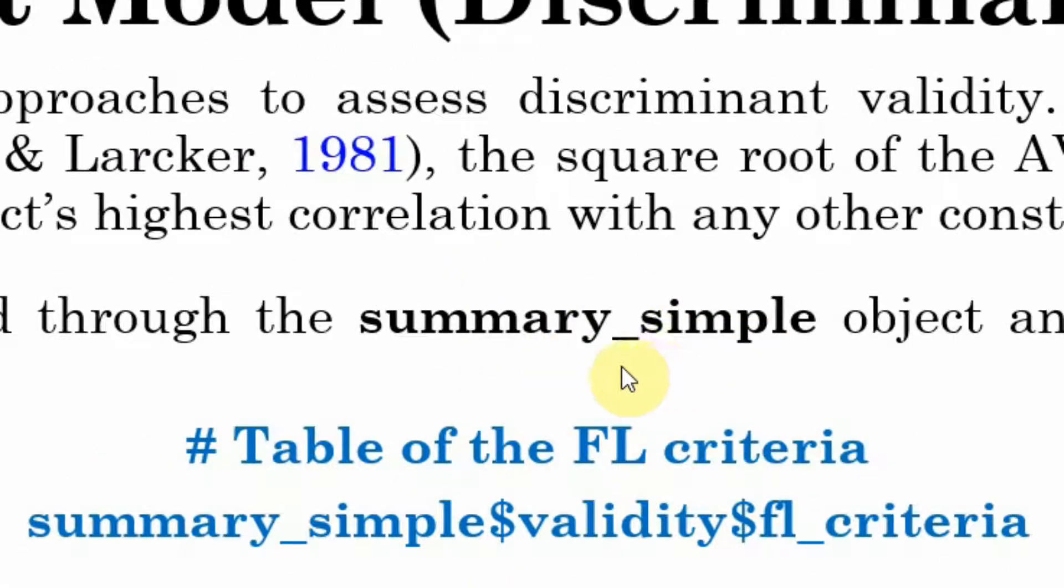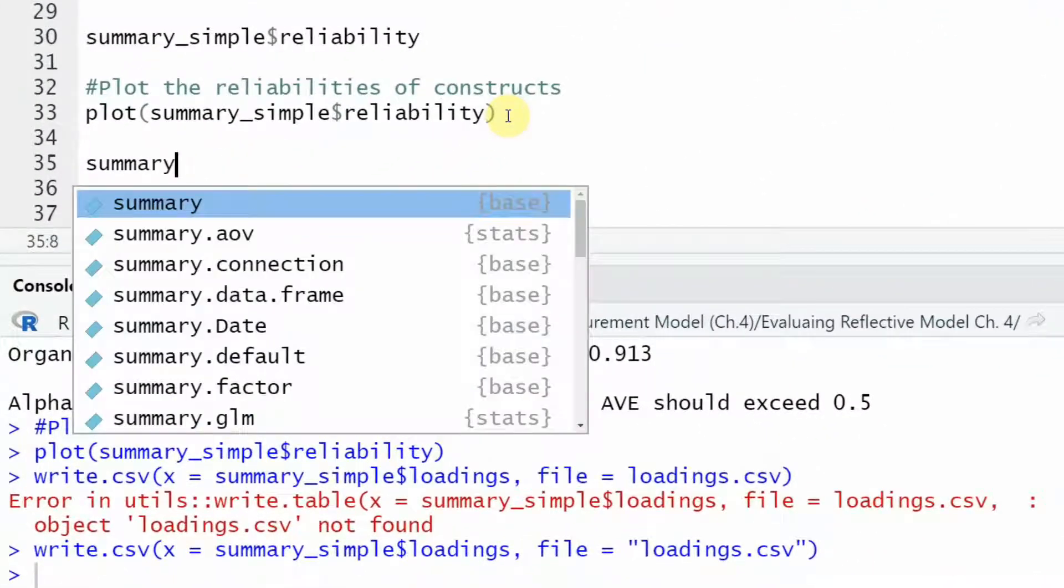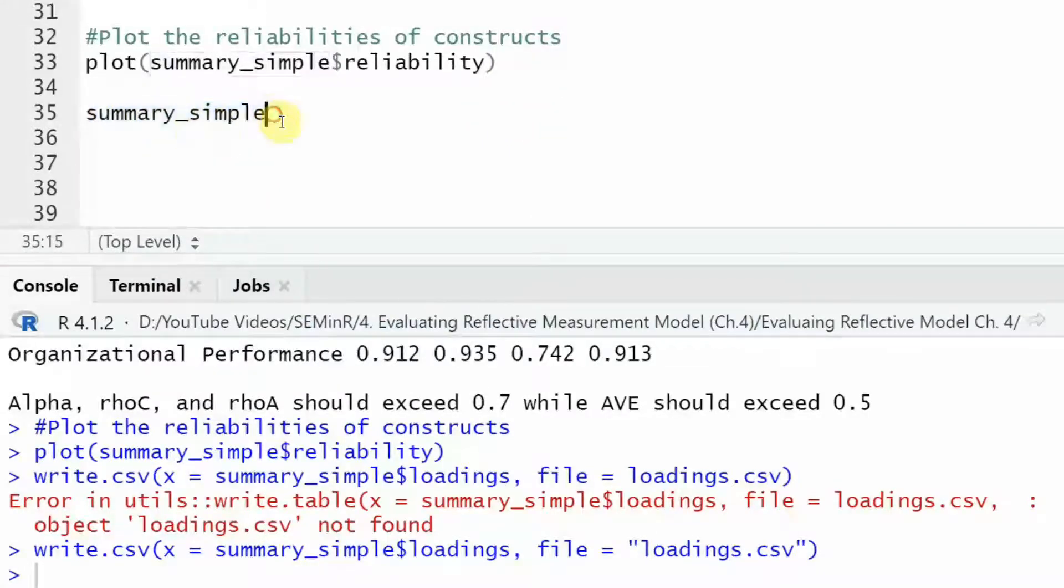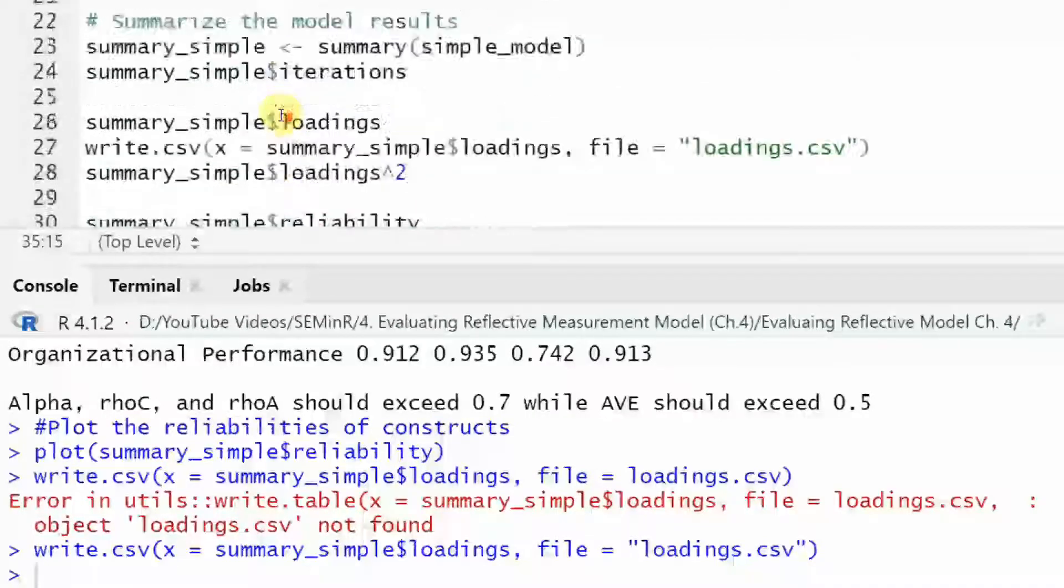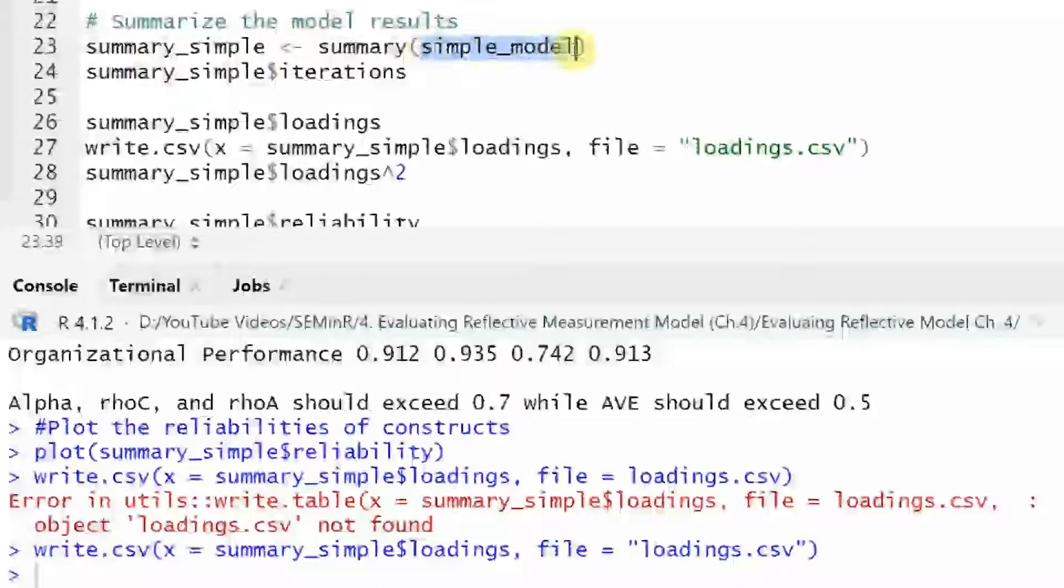We've got the results in summary underscore simple objects. How do we retrieve it? Let's have a look. Our output is in summary underscore simple. This particular summary object holds the PLS estimated model, that is simple underscore model. Here it is what we did here. Look at this. The estimated model here, the results were stored in this summary object.